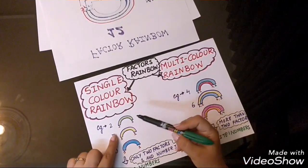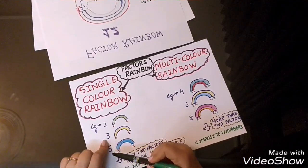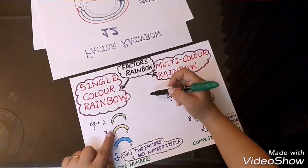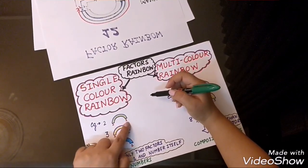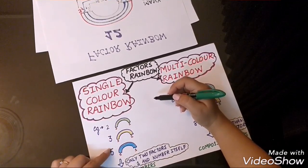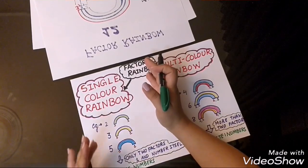Example of single color rainbows are 2, 3, 5. In this, we have only 2 factors. One is the number itself and the other is 1. So, there are only 2 factors in these numbers and that's why these numbers are called prime numbers.